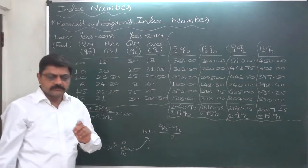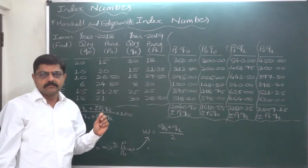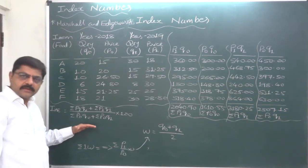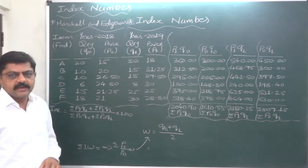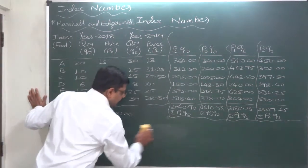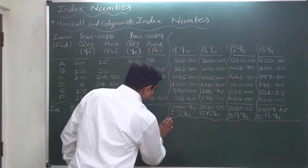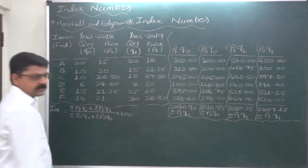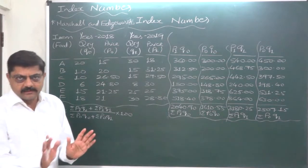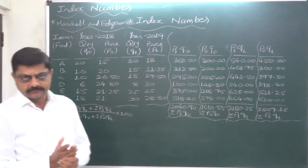But one thing that is actually different from Fisher's index number as well as Dorbys and Bowley index number is that here we are not required to calculate geometric mean or simple arithmetic mean of Laspeyres and Pashe index number. Marshall and Hoverty index number we have to calculate separately through its own formula only. We just have this simplified version of formula.